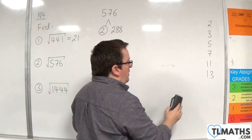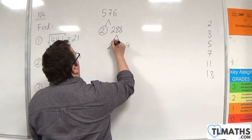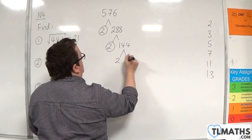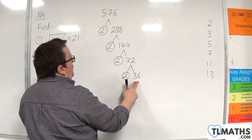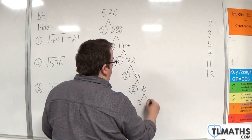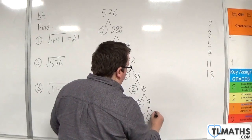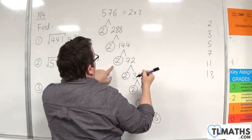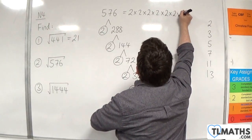Now 288 is not prime — in fact it's divisible by 2. That's quite easy: 2 times 144. And 144 is divisible by 2 as well — that's 72. And 72 is divisible by 2 — 36. 36 is divisible by 2 — 18. And then 18 is 2 times 9. 9 is not divisible by 2; it's 3 times 3. So 576 is 2 times 2 times 2 times 2 times 2 times 2 times 3 times 3.